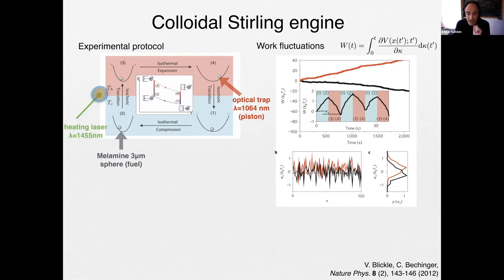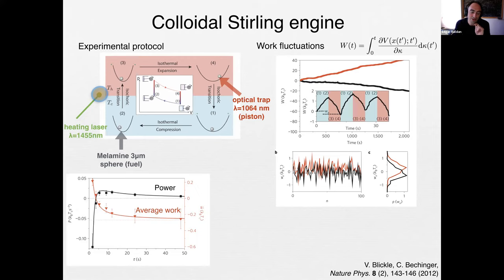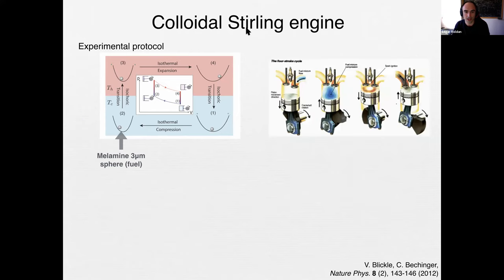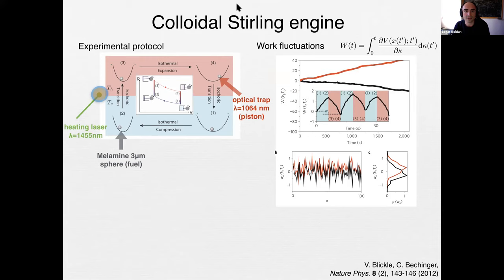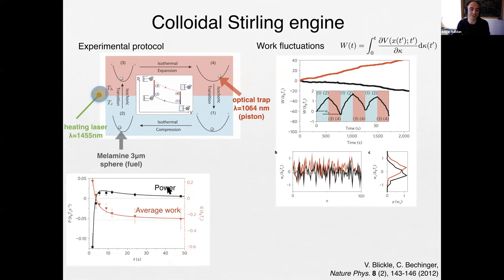In the first part you compress the effective volume of the particle — doing work on it. In the second part you expand and extract work. With this experiment you can measure distributions of work and measure the average, which relates to power, or its fluctuations. The average work as a function of cycle duration: the slower you go, the more negative the work — meaning we extract more work when we go slow.